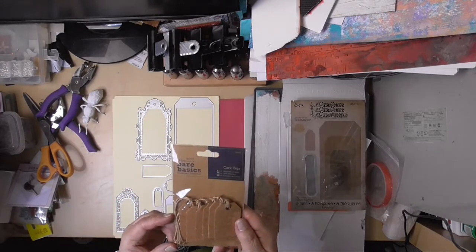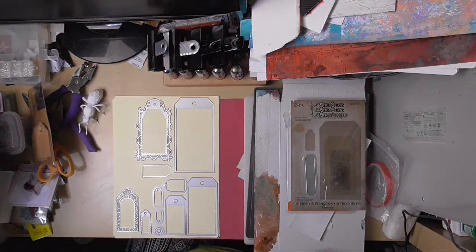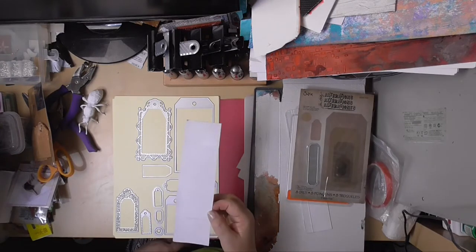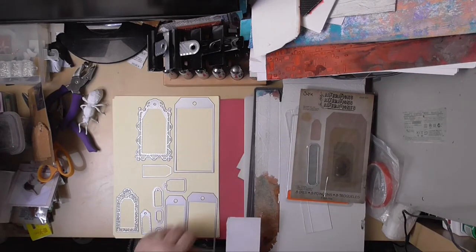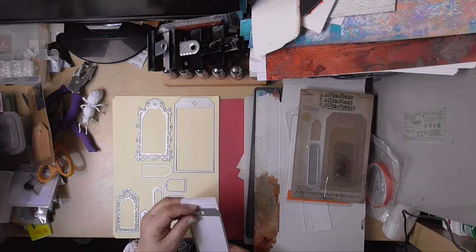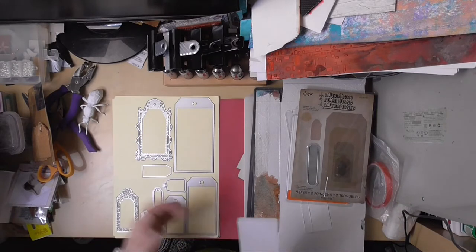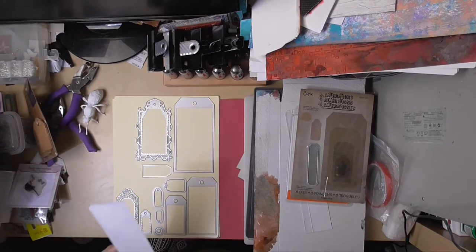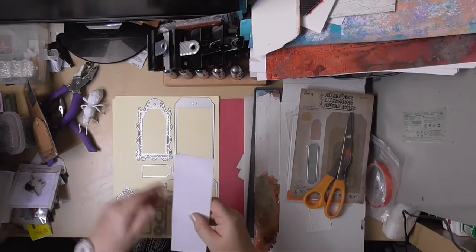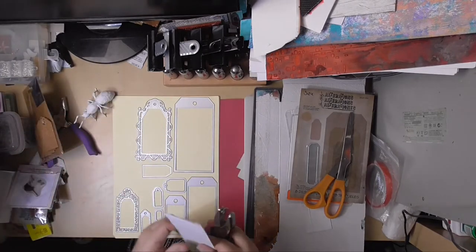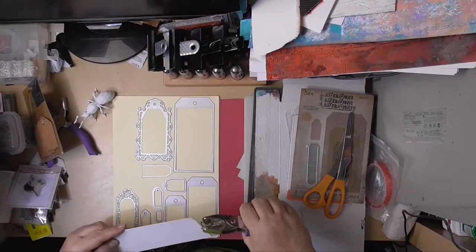But actually you don't need any of that. You could simply buy a set of tags, these are cork tags by Bare Basics from The Works, or you could just get a piece of card, gesso it, and cut it to the size and shape you want. Or use one of these die cuts on the card. But I'm going to use this piece here, but you don't need the die cut is what I'm trying to say.